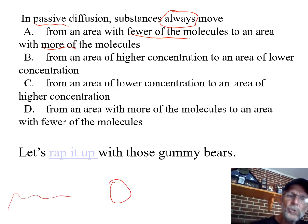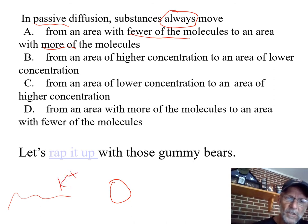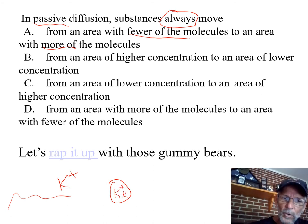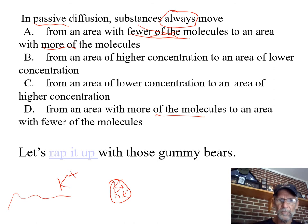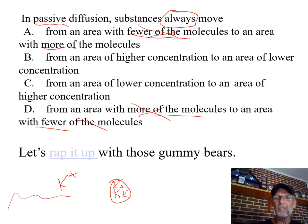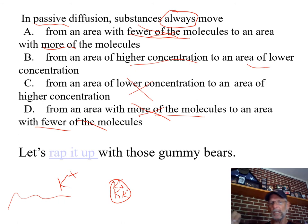It's not about fewer molecules and more molecules — it's concentration, not number. For example, if you're a cell surrounded by the ocean, there may be more potassium ions total in the ocean than inside you, but inside you is a higher concentration of potassium. So it's concentration that matters, not the raw number. That's why the direction of diffusion is always from the area of higher concentration to lower concentration.